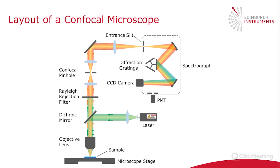If you want to do photoluminescence, you would use a diffraction grating with a low dispersion, because you typically have very broad spectra. If you want to do Raman microscopy, you would use a high groove density grating for the higher resolution required to analyze the Raman peaks. This turret allows you to change the modality of the instrument depending on the resolution and spectral range you require.